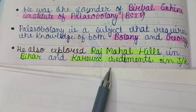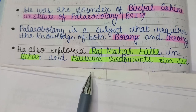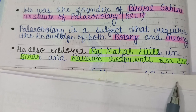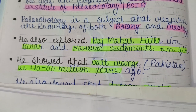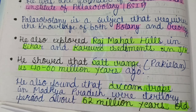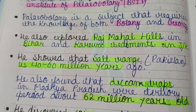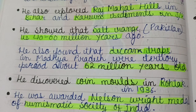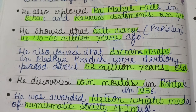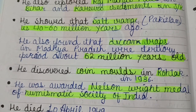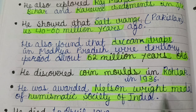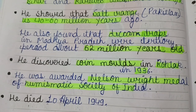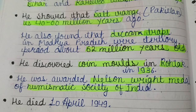He explored the Rajmahal Hills in Bihar and Karewa sediments in Jammu and Kashmir for fossils. He showed that the Salt Range, now in Pakistan, is 40 to 60 million years old, and found that the Deccan Traps in Madhya Pradesh were about 62 million years old. He discovered coin molds in Rohtak in 1936 and was awarded the Nelson Wright Medal of the Numismatic Society of India. Numismatics is the branch of science in which we study coins. He died on 10th April 1949.